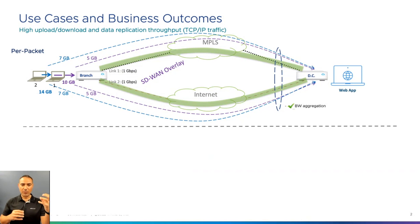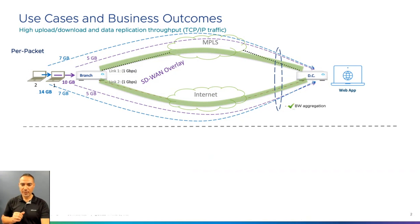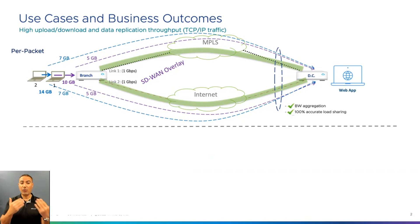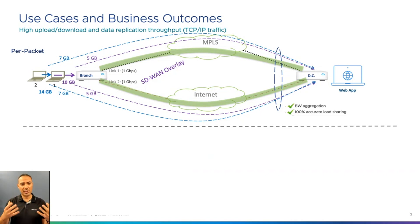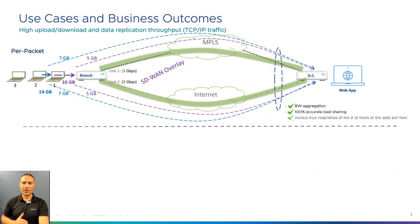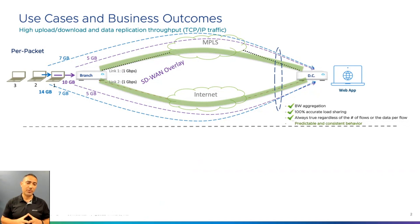Bandwidth aggregation means user number one who is sending 10 gigabytes will experience the application performance of sending data over a circuit of two gigabytes per second bundled together. Second, this always gives us 100% accurate load sharing — always sending the same amount of data on all transports. You can assume different speeds on both circuits and still get the same accurate load sharing. Finally, this is independent of the number of flows. It doesn't matter how many flows you have, even if it is one flow, we can always utilize all of the transport circuits with 100% accurate load sharing, giving us predictable and consistent load utilization.